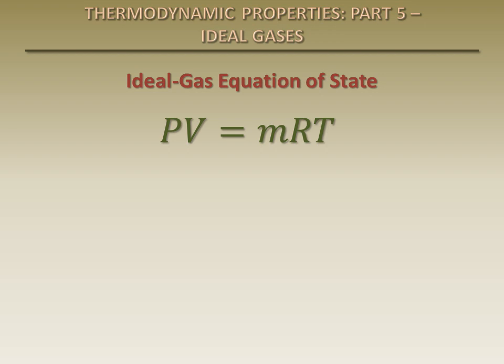An ideal gas is an imaginary substance which obeys this relationship. It has been experimentally observed that real gases approximately obey this relationship at low pressures and high temperatures. Deviation of real gases from ideal gas behavior can be measured using the compressibility factor, Z.